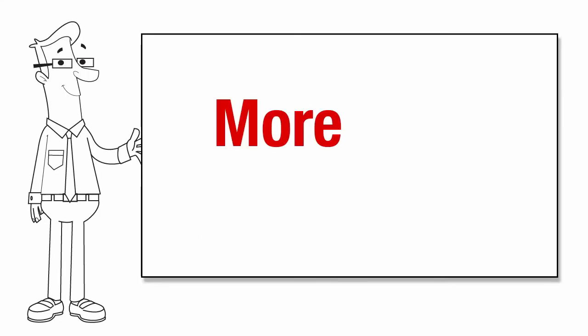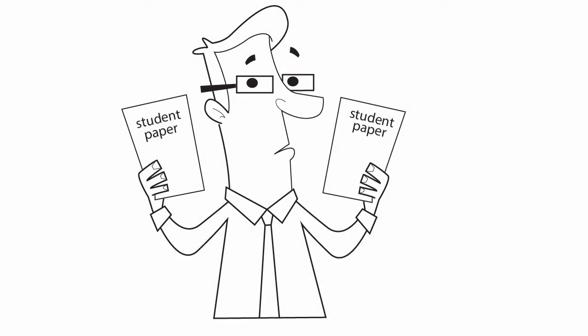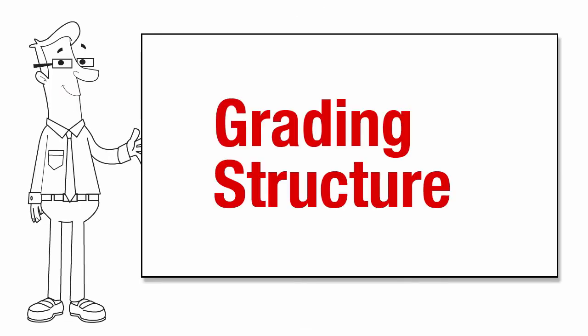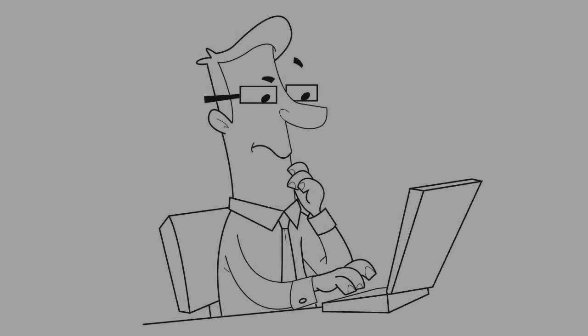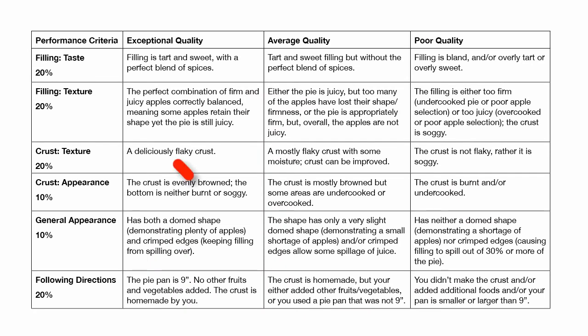Rubrics make evaluations more objective. Without a rubric, the tendency to compare papers and projects to each other is replaced by comparing them to objective criteria. Rubrics bring structure to your grading. Determining the specific criteria to grade can be daunting. Rubrics help you determine exactly what you want to measure and the values that should be assigned.